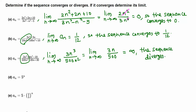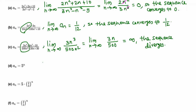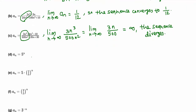The nth term when n goes to infinity: the terms are getting bigger and bigger in this case. The limit of 5 raised to n when n goes to infinity is 5 raised to infinity — multiplying 5 infinitely many times gives infinity — so the sequence diverges.